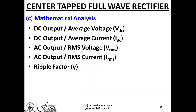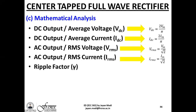In summary, the mathematical analysis gives: VDC = 2Vm/π, IDC = 2Im/π, VRMS = Vm/√2, IRMS = Im/√2, and ripple factor γ = 0.4834 (48.3%). This very large ripple content makes the center-tap full wave rectifier technically unsuitable for real-life practical applications unless a filter is attached to remove the high ripple content.